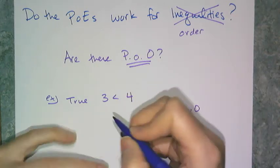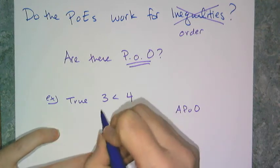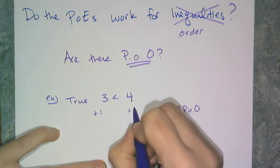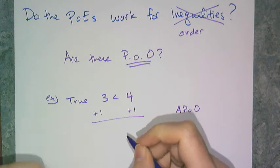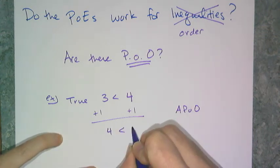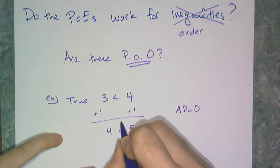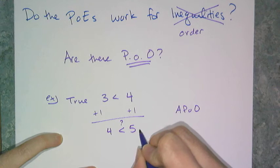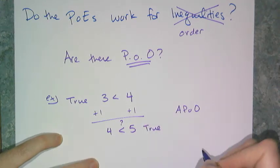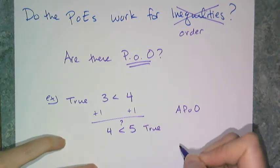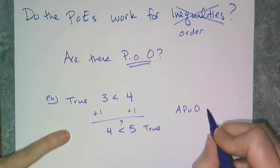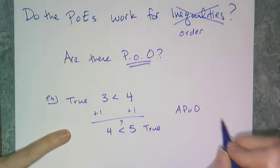If I add the same thing to both sides — say, a positive number — do I get an inequality that is still true? So is 4 less than 5? Yes it is, that's true. So I can add a positive number to both sides of the inequality and nothing changes. Therefore I have the positive addition property of order.